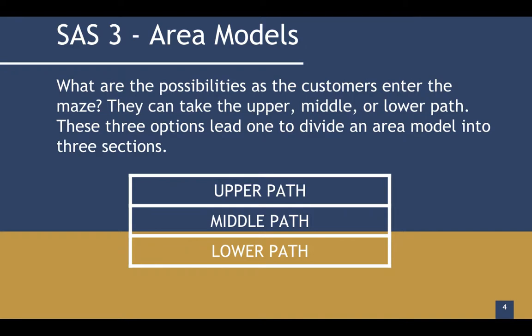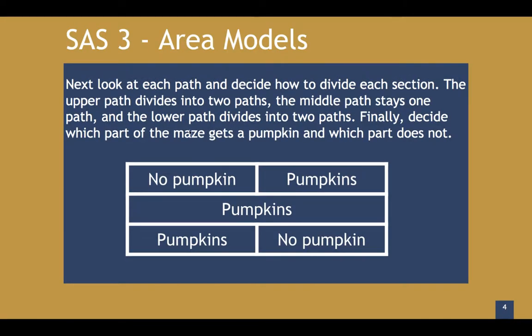The three options are going to make us separate our area model into three sections: the upper section, the middle section, and the lower section. They represent the upper, lower, and middle path. Let's look at each path and decide how to divide each section.